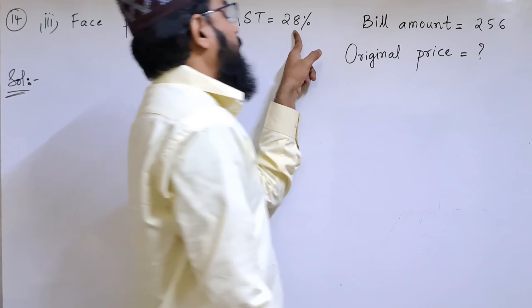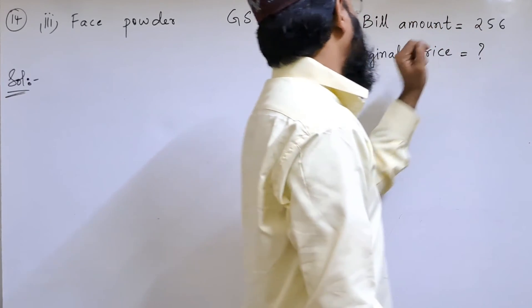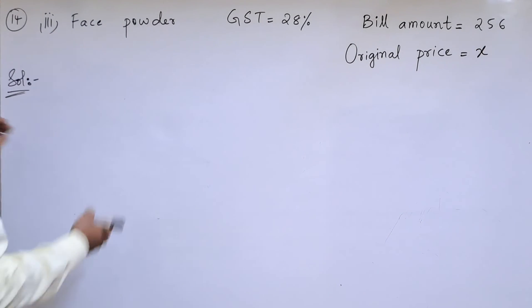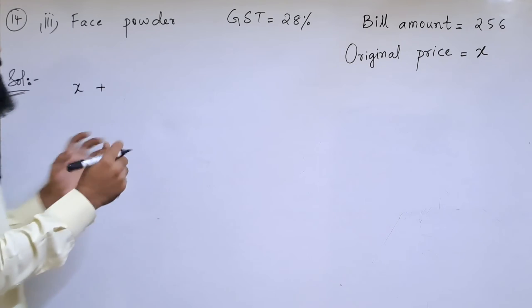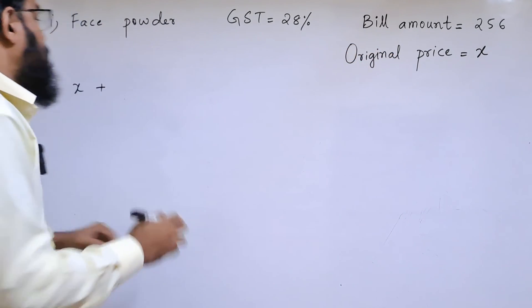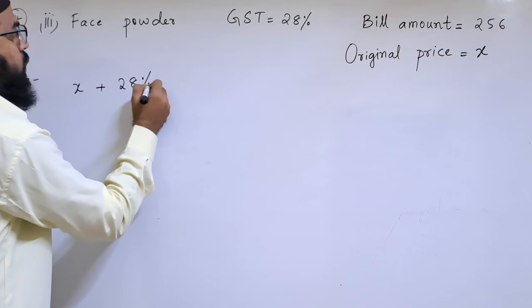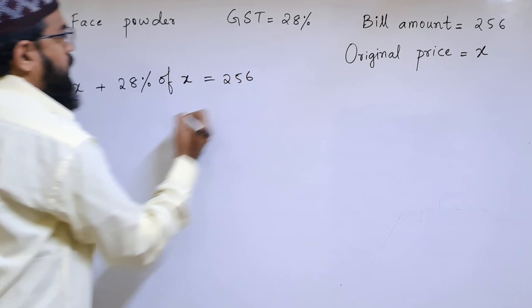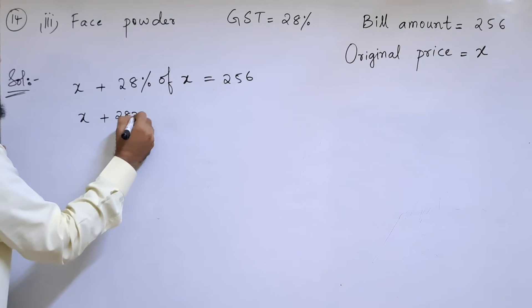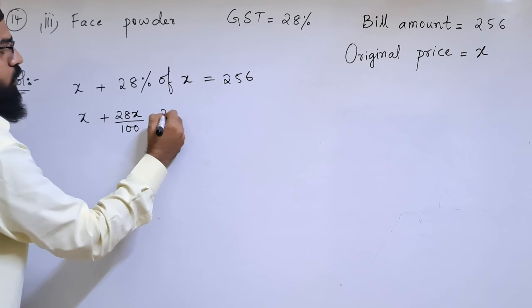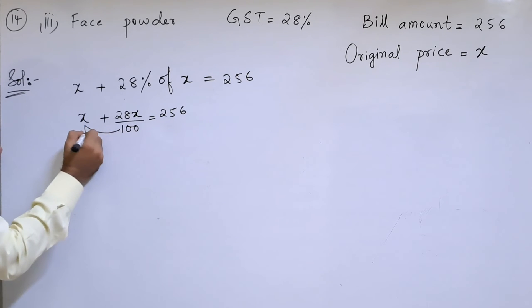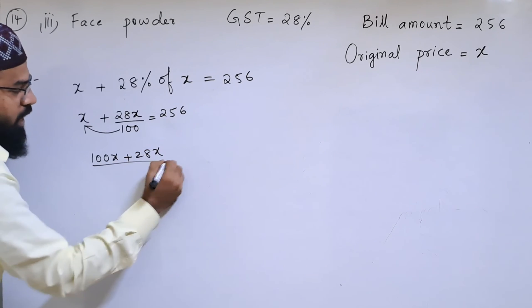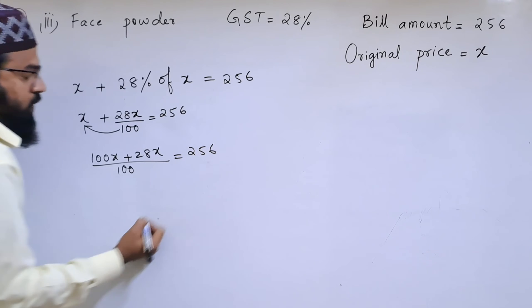The third item has a bill amount of ₹256 and GST of 28%. We take the original price as x. We know that for this original price a tax of 28% has been imposed, so x plus 28% of x equals 256. Expanding: 100x plus 28x by 100 equals 256.